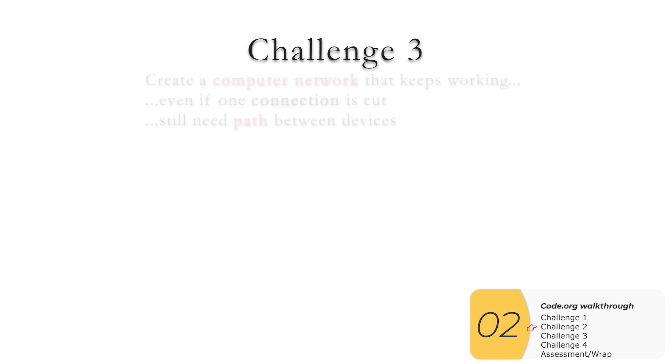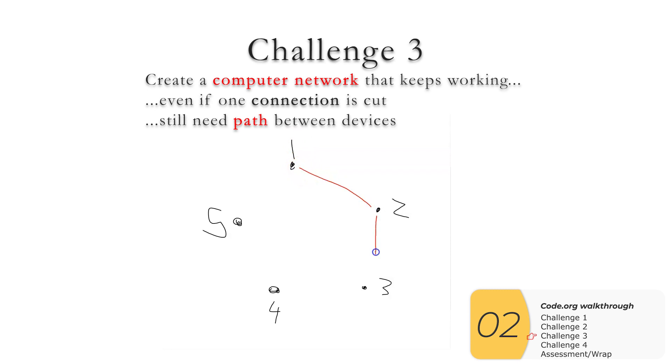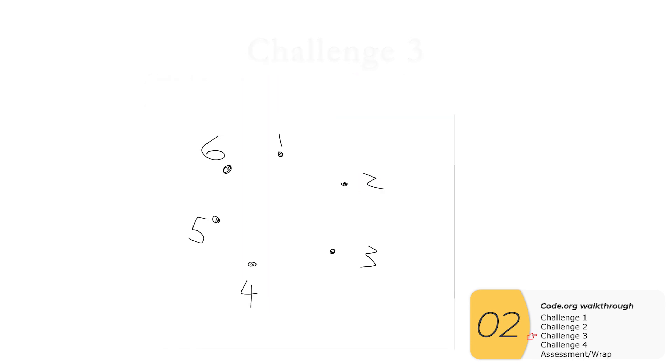So this brings us to challenge 3, which is to create a computer network that keeps working even if one connection is cut. So we still need a path between different devices. So basically we need alternate paths between different devices. So if I'm trying to go from 1 to 2, and my connection between 1 and 2 is cut, I still have a path to 2, an alternate path, a slower path, but still a path by going 5, 4, 3, then 2. And the concept with 6 computing devices is more or less the same.